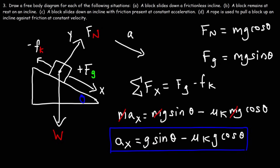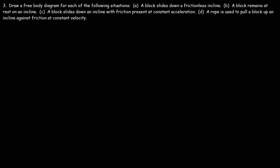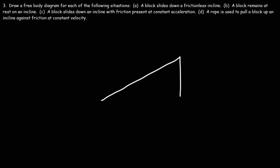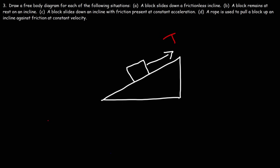Now let's move on to part D. A rope is used to pull a block up an incline against friction at constant velocity. We draw an incline going up to the right with the block on it. The tension force pulls the block up the incline. We still have a downward weight force and a normal force. The normal force has to be less than the weight force because of the angle — they would only be equal if the angle is zero.